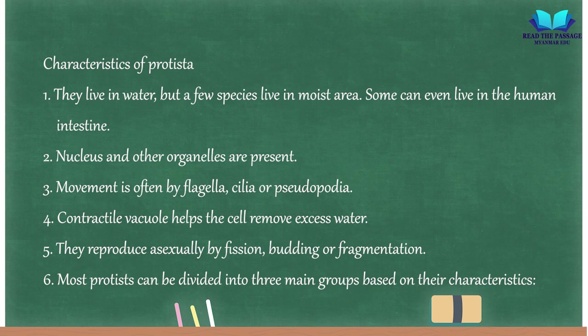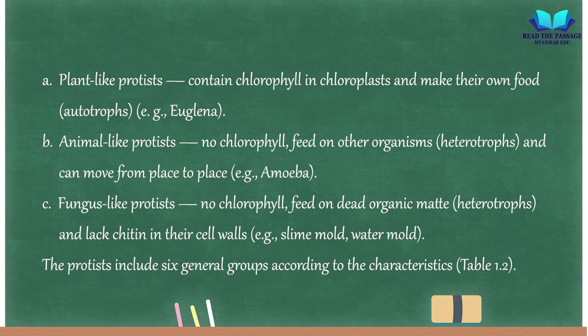Further characteristics of Protista: (2) Nucleus and other organelles are present. (3) Movement is often by flagella, cilia, or pseudopodia. (4) Contractile vacuole helps the cell remove excess water. (5) They reproduce asexually by fission, budding, or fragmentation. (6) Most protists can be divided into three main groups: (A) Plant-like protists contain chlorophyll in chloroplasts and make their own food (autotrophs), e.g., Euglena.